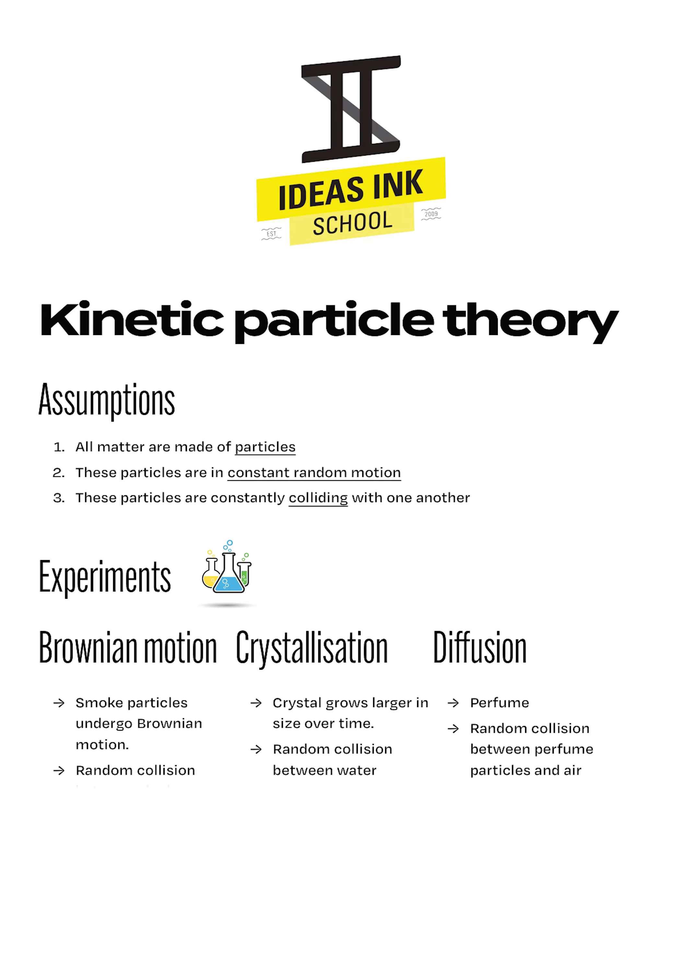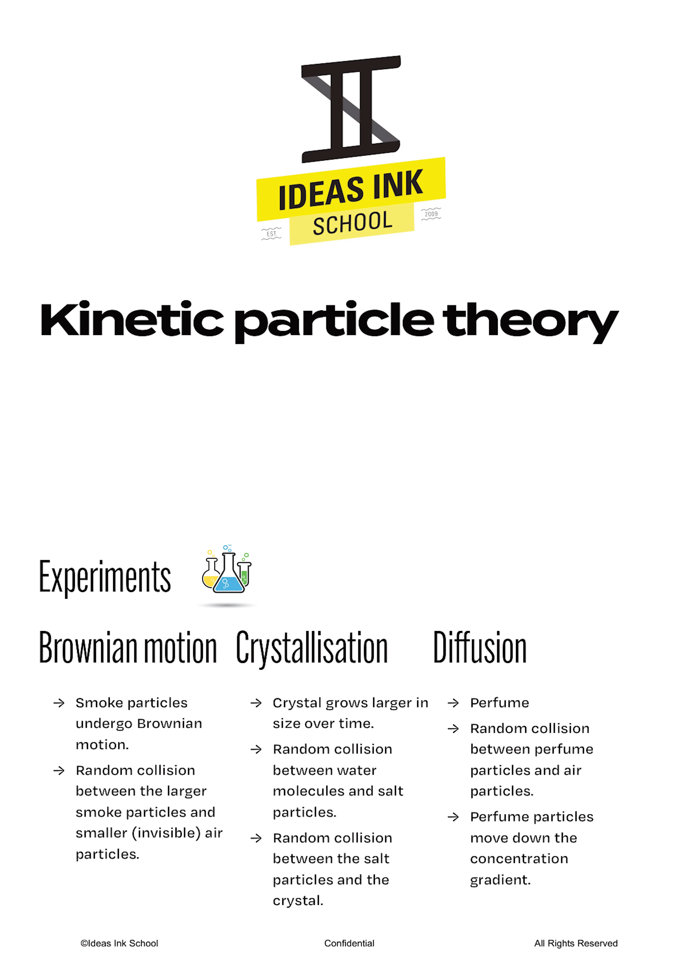And to prove that these assumptions are true, we can perform three experiments. The first experiment describes Brownian motion. In this experiment, smoke particles are observed under a light microscope. Due to the random collisions between the larger smoke particles and the smaller invisible air particles, the smoke particles appear to move about randomly to the observer.